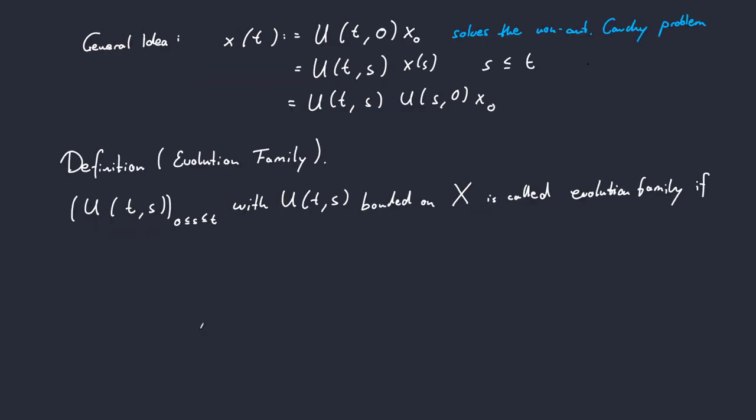We are now ready to formulate the first part of our definition for evolution families. So evolution family is a family of bounded operators on a Banach space X that fulfills the following algebraic condition that we can already derive from what we saw below.